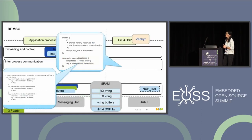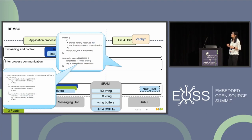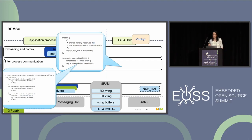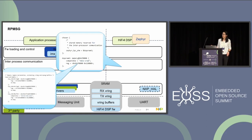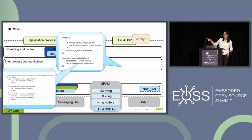When the RPMSG driver gets an incoming message, it compares the destination address of that message to the local address of the endpoint. If they match, the message goes to that endpoint — that's basically how communication works between the two cores. For our sample, we use the OpenAMP resource table sample from Zephyr. For this, you need to add a DTS overlay with two important things: the Zephyr IPC shared memory, and the DSP SRAM3 node, where we define the base address and size of the shared memory.